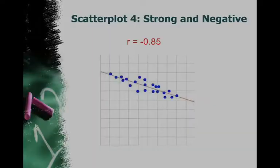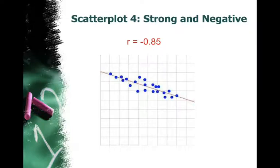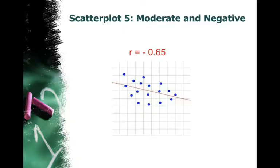You can use the same thought process when it's negative. We're coming from the left down to the right. When it's strong and negative, these points are right on the line or close to it and close to one another. When it's moderate and negative, the points are going to be further from the line and from each other.